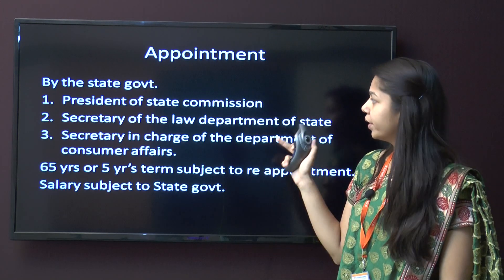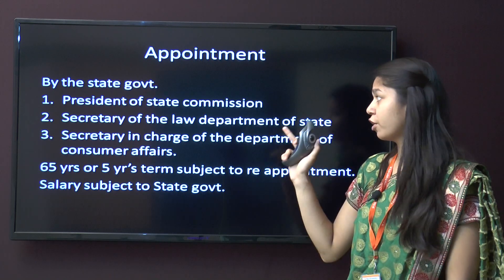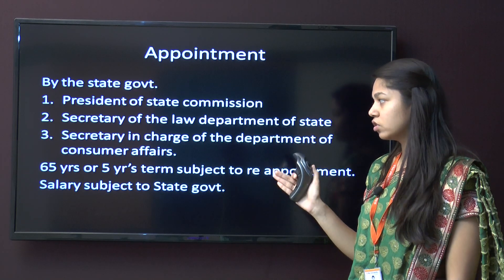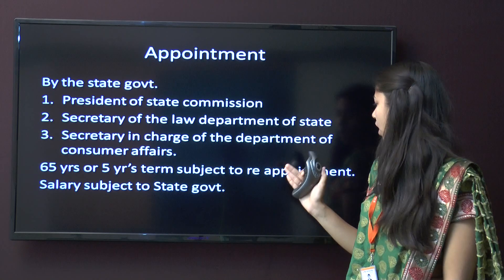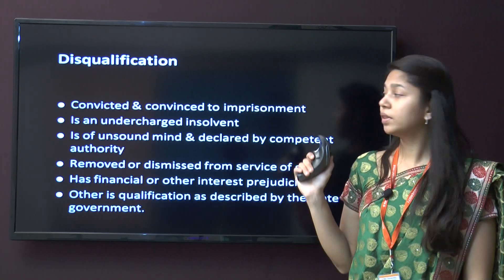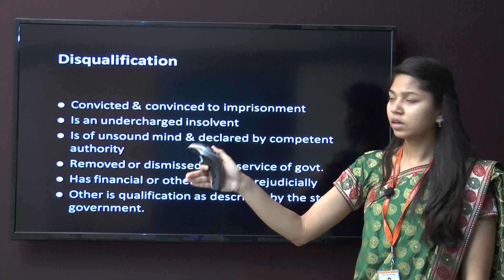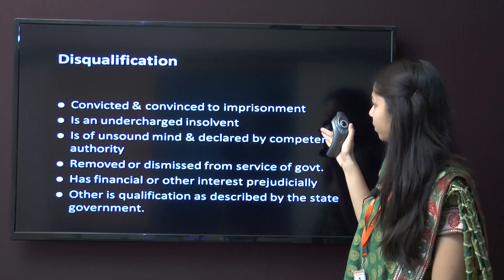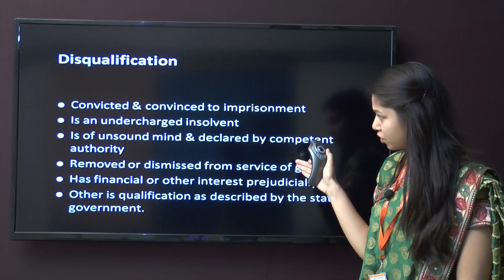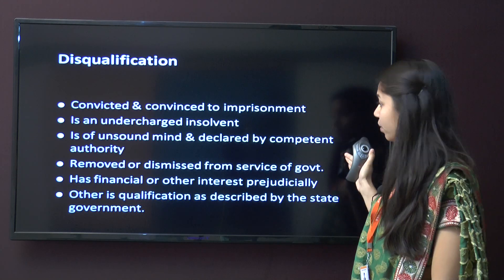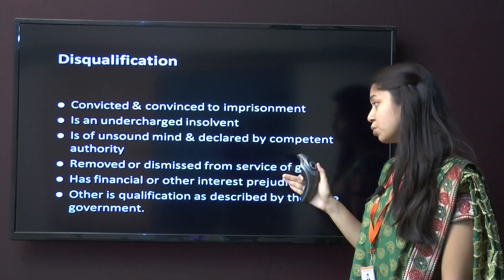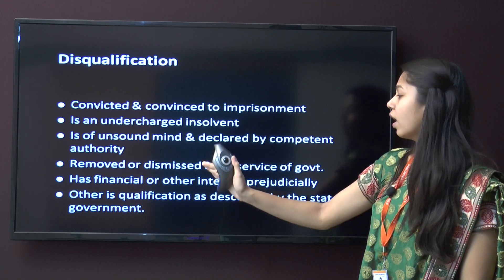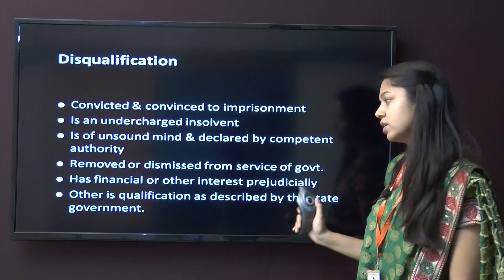Appointment is done by the state government, involving the president of the state commission, the secretary of the law department of the state, and the secretary in charge of the department of consumer affairs. The term is 65 years of age or 5 years, subject to reappointment, and salary is subject to the state government. Disqualifications are the same as the district forum: convicted and sentenced to imprisonment, being an undischarged insolvent, being of unsound mind declared by a competent authority, removed or dismissed from government service, having financial or other prejudicial interest, or any other qualification as described by the state government.